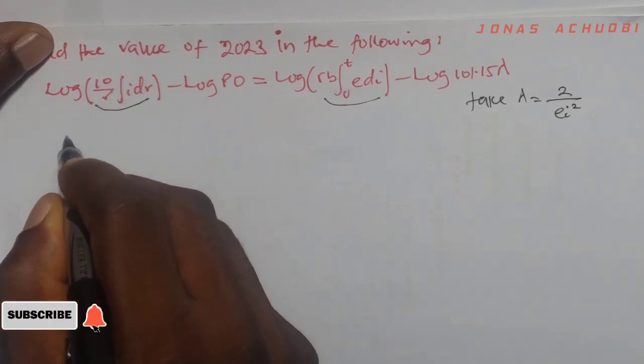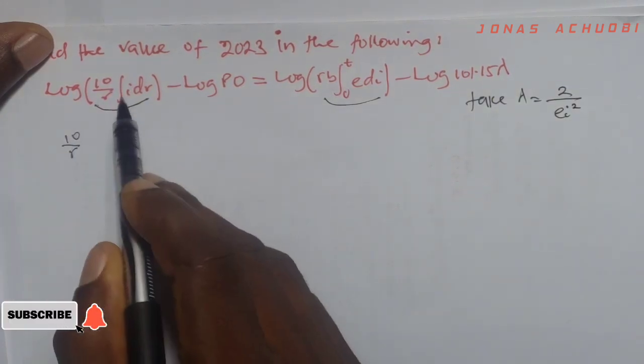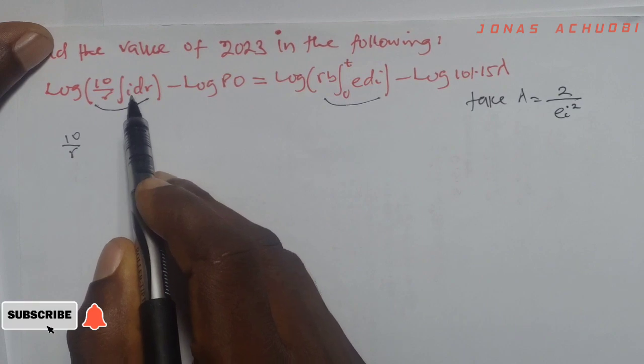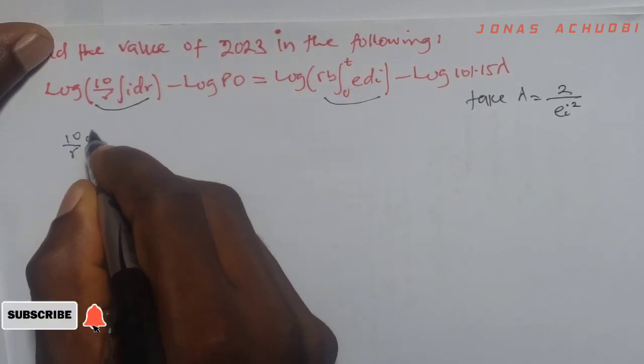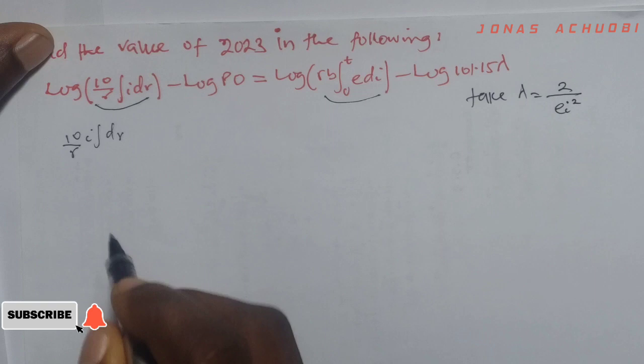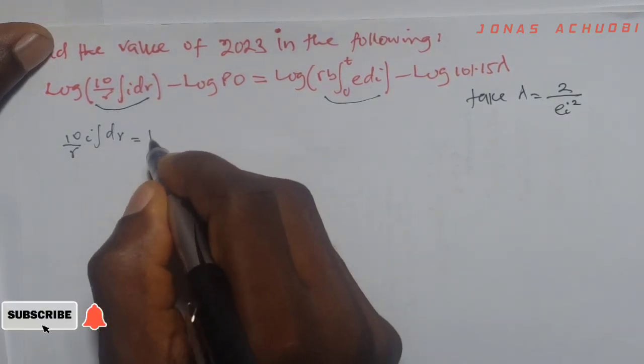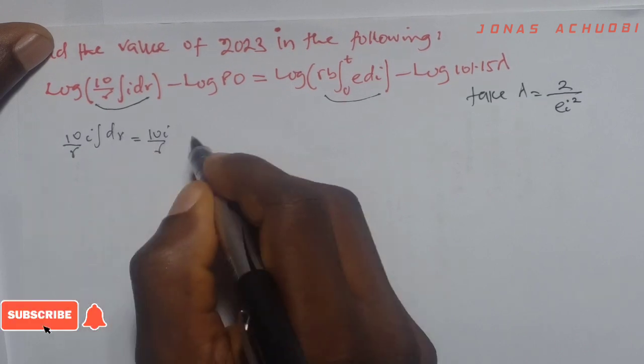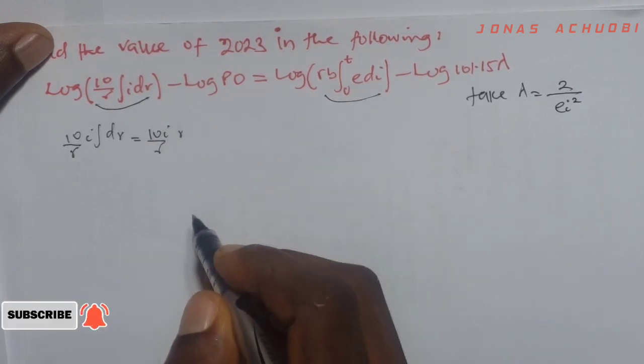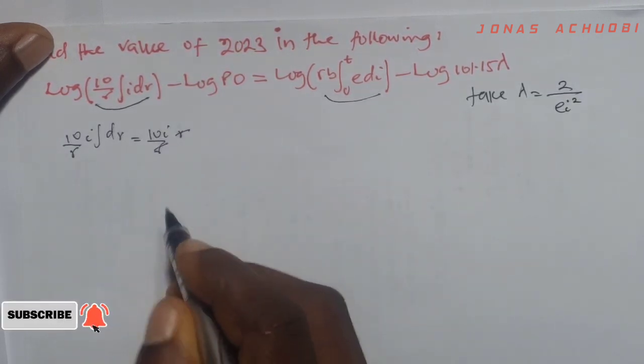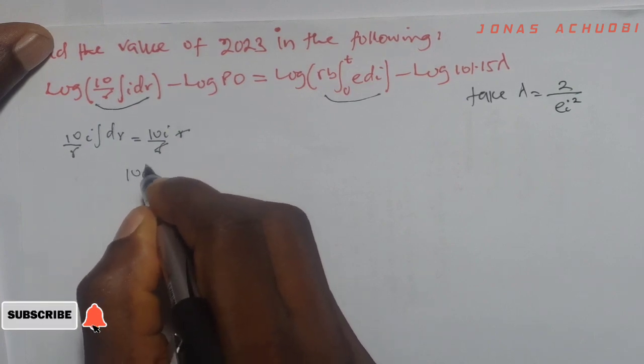So this integral is 10 over r integral of i dr. We integrate with respect to r so we can take i out and we have integral of dr. Now if we integrate dr, we get r so that becomes 10i over r integral of dr is r. So that r and r can cancel and what we have left is 10i for this integral.